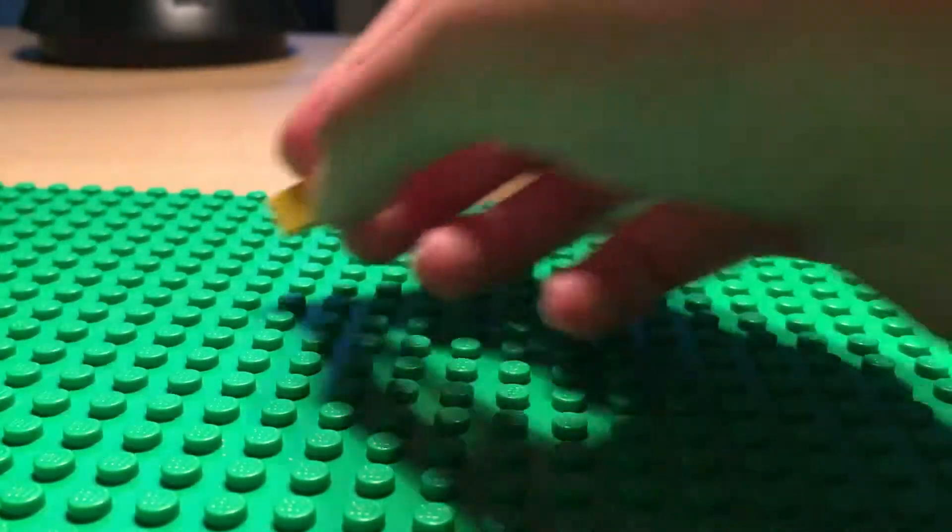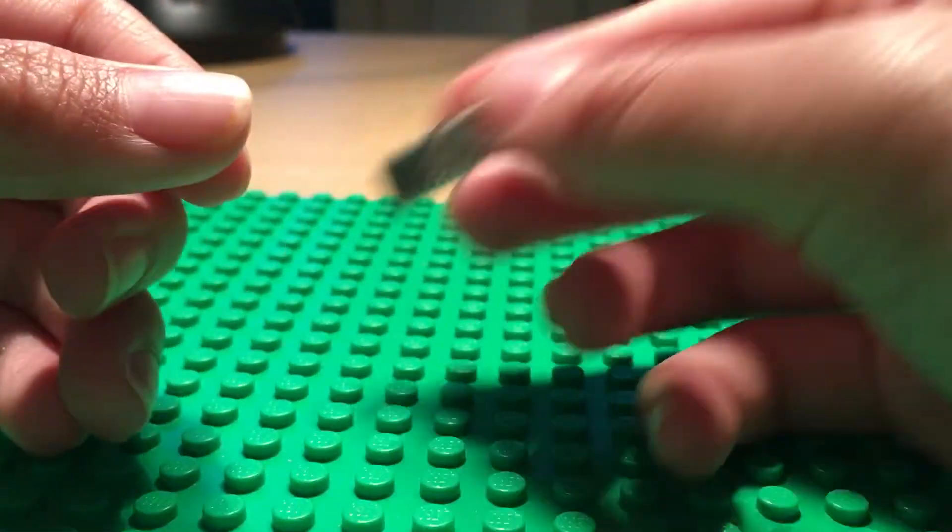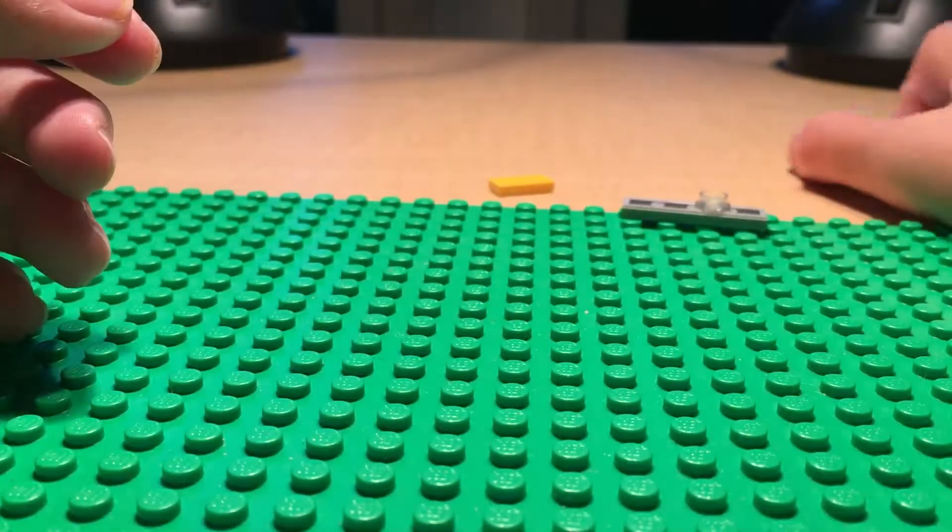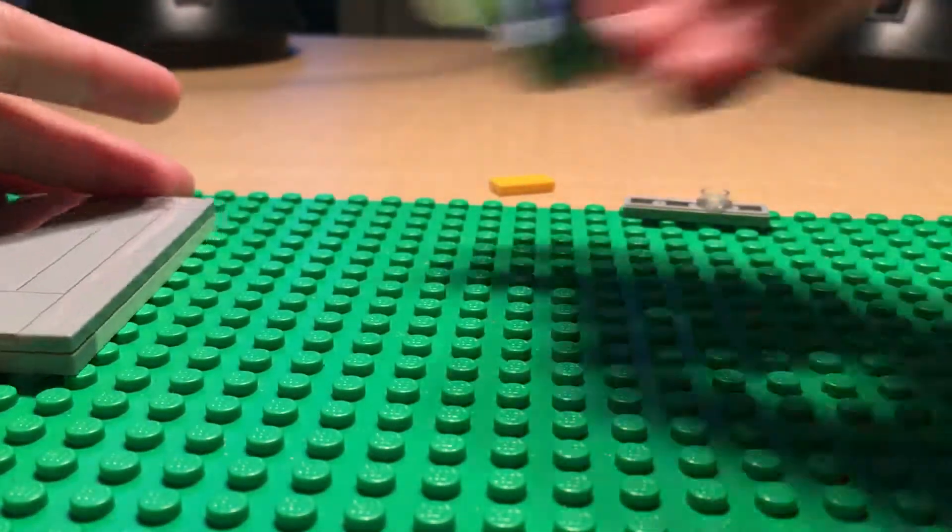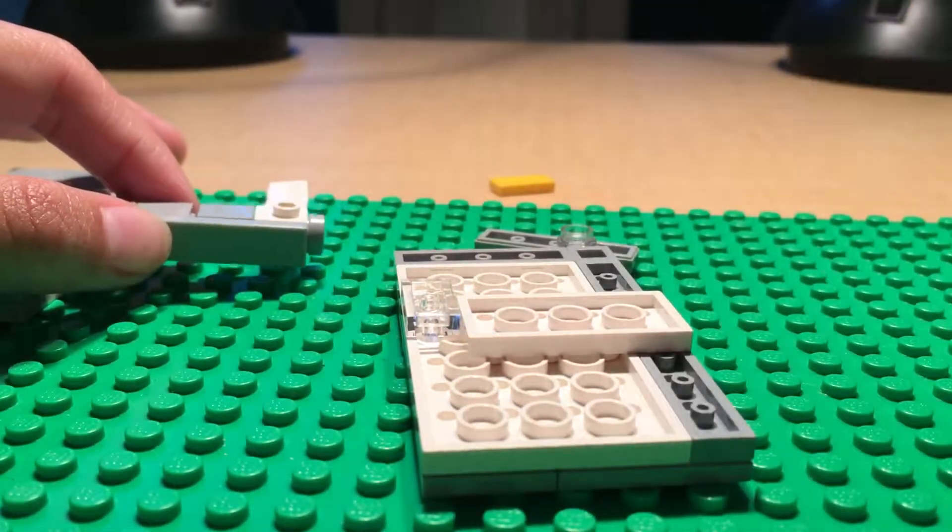You need a one by two smooth, one by four, and a stud. It doesn't matter. Just have all these pieces and I'll show you how they get together.